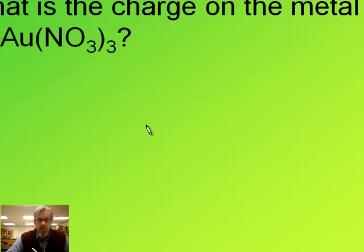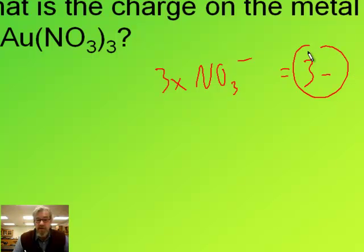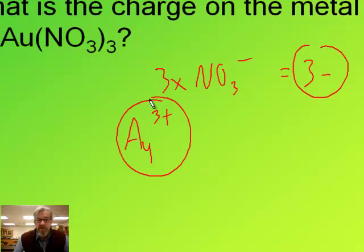What's the charge on the gold in gold nitrate? We've seen nitrate before — NO3 one minus. There are three of them here, so that gives us a total negative of three minus from the anions. We have one gold atom, so it must have a charge of three plus to balance.